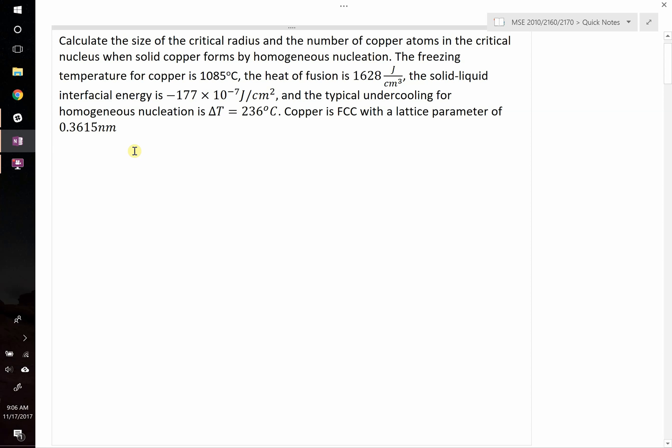Okay, for this question we're told that we need to calculate the size of the critical radius as well as the number of copper atoms in this critical nucleus when solid copper forms via homogeneous nucleation. We're told the freezing temperature of copper in degrees Celsius, we're given the heat of fusion, we're given the solid-liquid interfacial energy or the surface energy, and we're told that the typical undercooling for homogeneous nucleation of copper is 236 degrees Celsius.